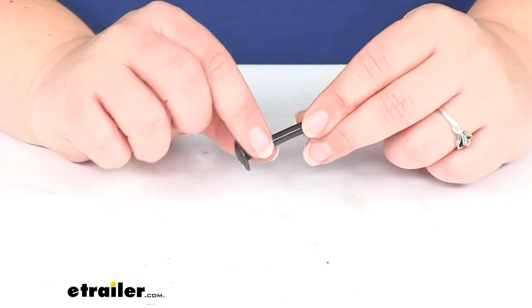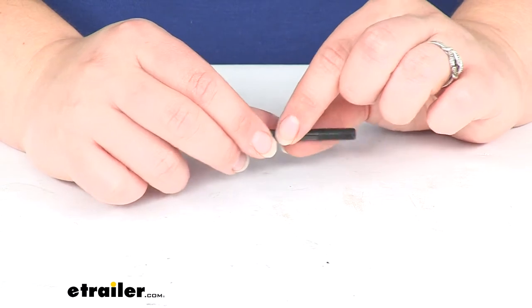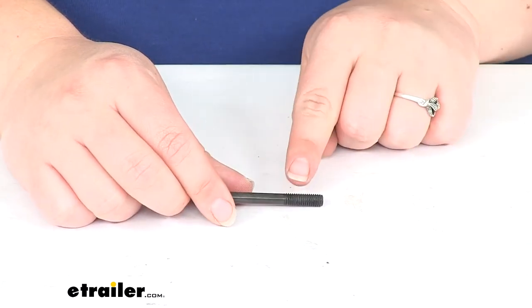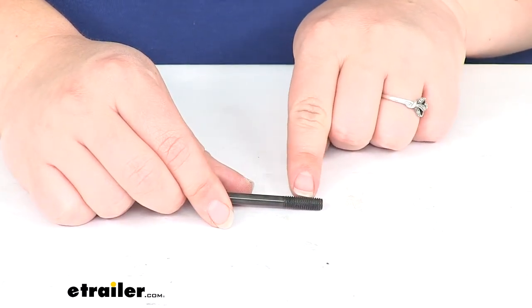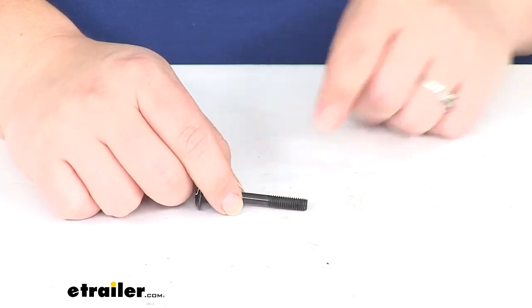This is an M6x50 carriage bolt. So basically that 50 refers to the number of threads per inch and M6 is the size.